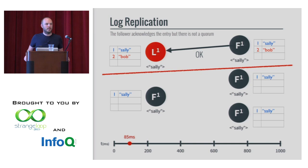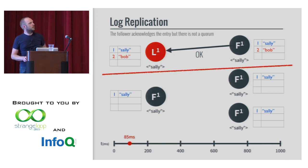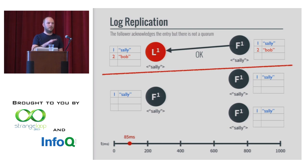Since we're talking about reads: even with a partition, that leader with Bob stays leader but Bob was never committed. If you read from that leader, would you see Bob? Actually Bob is uncommitted — the value under the leader is still Sally until it's committed. So you always read Sally. Bob is never actually a real committed value.